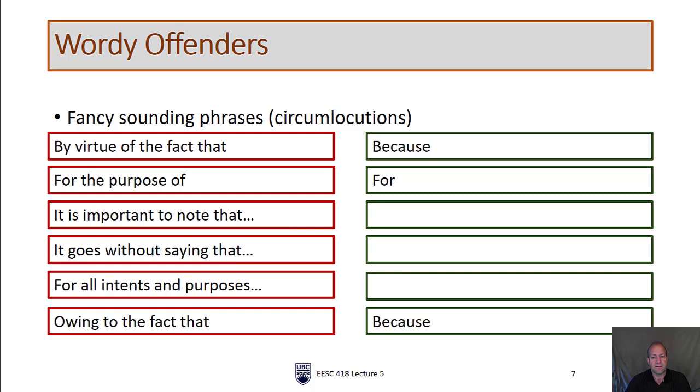The next category are called circumlocutions, and ironically, this is a fancy-sounding word for fancy-sounding phrases. Circumlocutions means 'to speak around' in Latin. I really like this word actually, but that's besides the point. Here are some fancy-sounding phrases that you might see in a technical report that can be either completely eliminated or replaced with a single word. 'By virtue of the fact that'—we can just say 'because.' 'For the purpose of'—we can say 'for.' 'It is important to note that'—we can just delete this one entirely. This is a pet peeve of mine. If something is important to note, great, note it. You don't need to tell the reader what's important. Really, if it's not important, why would it be in your report in the first place anyway?